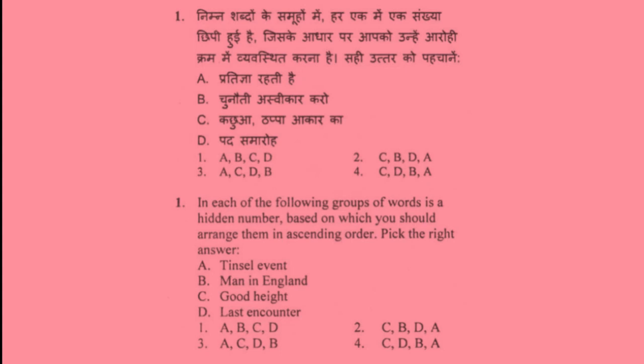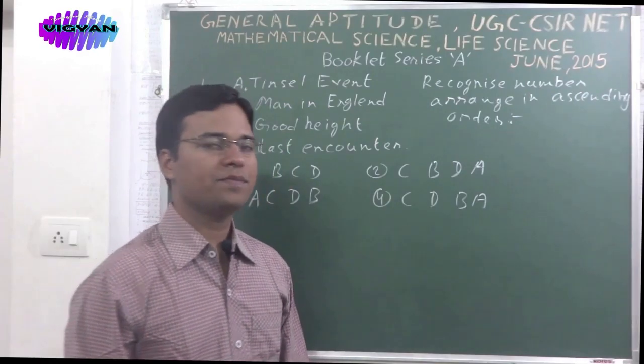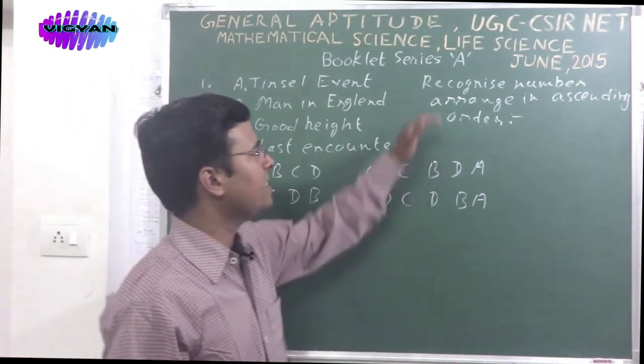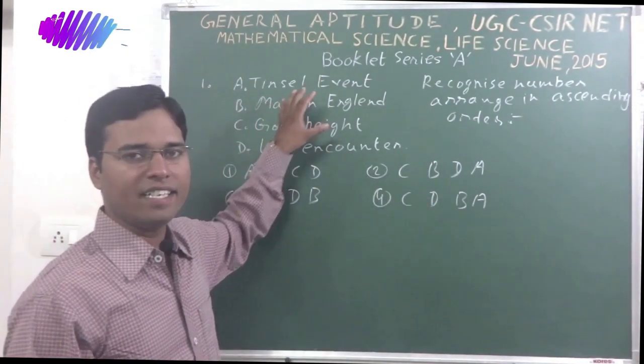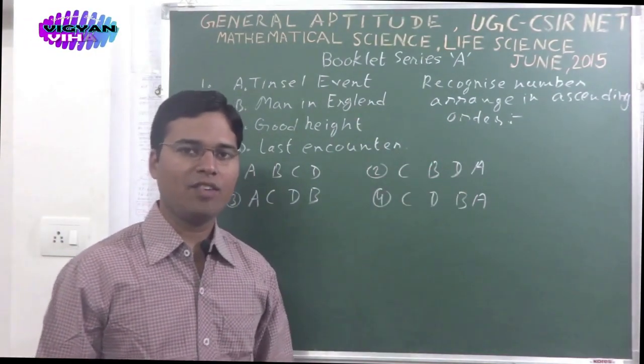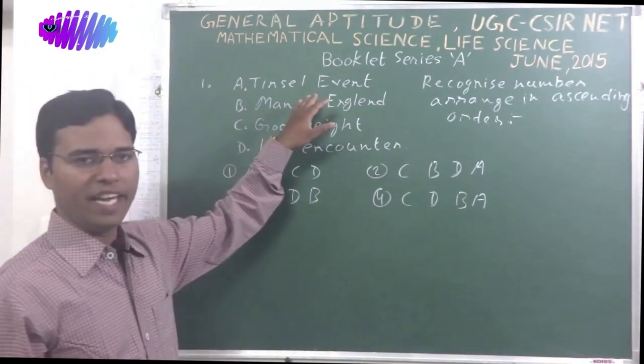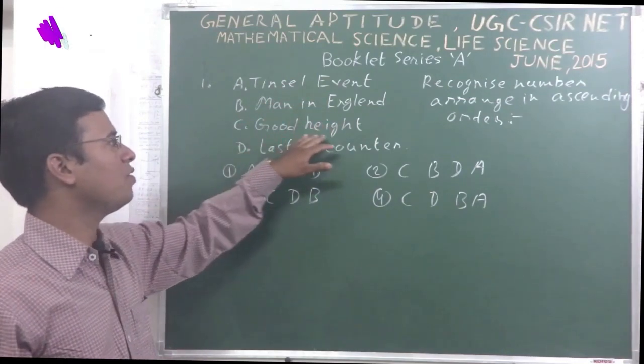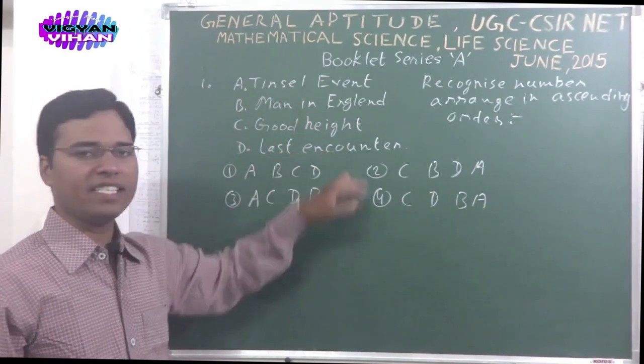There are 4 options. Option 1: A, B, C, D. Option 2: C, B, D, A. Option 3: A, C, D, B. Option 4: C, D, B, A. The first problem is here. There are 4 sentences. We will have to recognize the numbers which are hidden in those words and then arrange them in ascending order. First we read A. Tinsel event, B. Men in England, C. Good height, D. Last encounter.